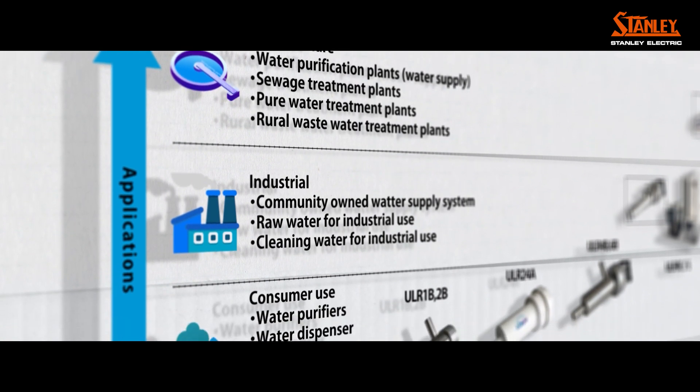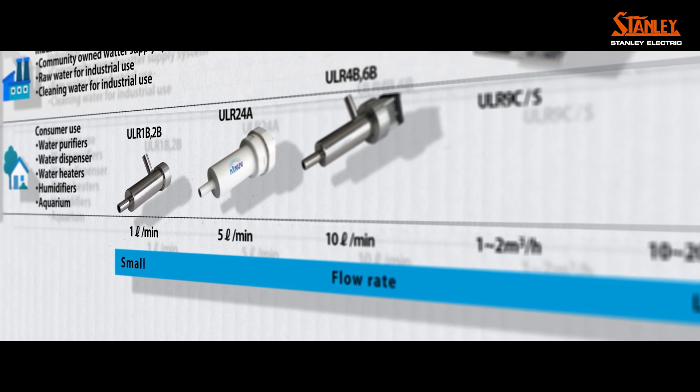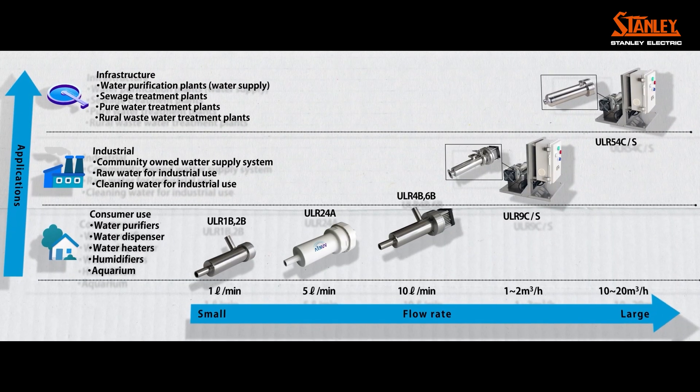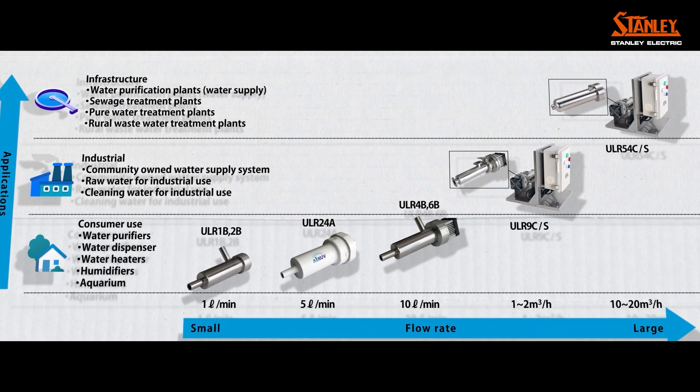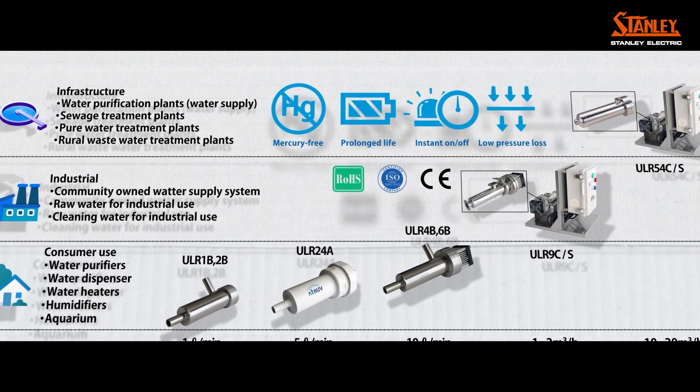ALNUV Aqua offers a range of products for different industries and applications, and for small to large water flow rates. Common features of the products include mercury-free, prolonged life, instant on-off, and low pressure loss.